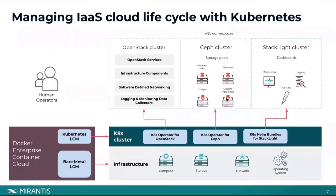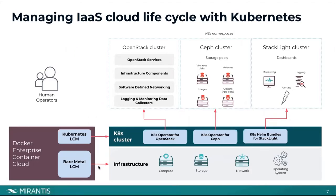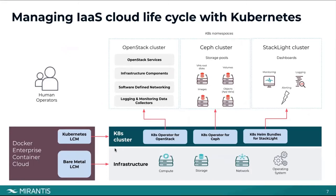How does deployment and management look from an operator's perspective? Docker Enterprise Container Cloud takes care of provisioning the infrastructure via a special bare metal management system — all the HostOS provisioning, HostOS configuration, and node discovery are handled through this mechanism. The next step is to deploy a Kubernetes cluster on top of that. Essentially, everything running in the user space of the HostOS is a container. We install the Kubernetes cluster, install necessary add-ons like operators, and implement lifecycle management for OpenStack and supporting components as Kubernetes operators.